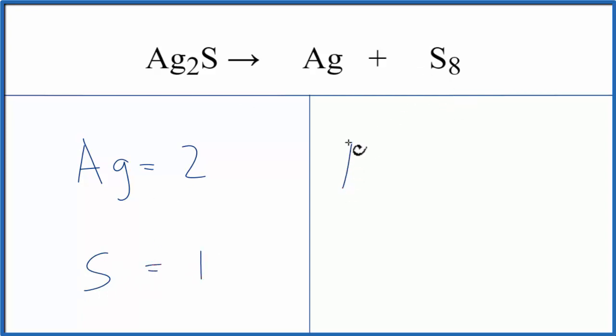On the product side, silver, we have just the one, and then sulfur, we have eight.